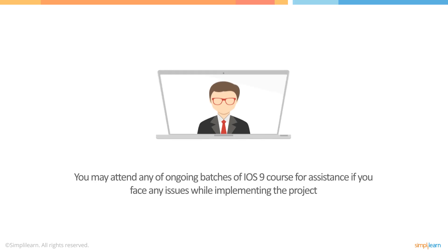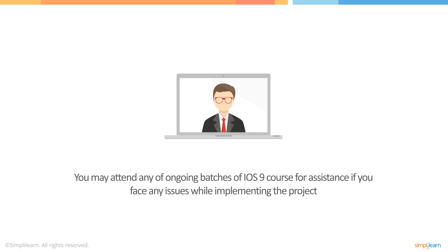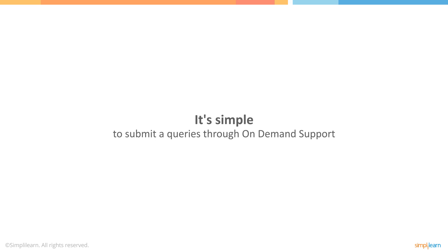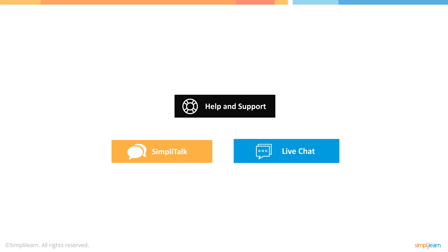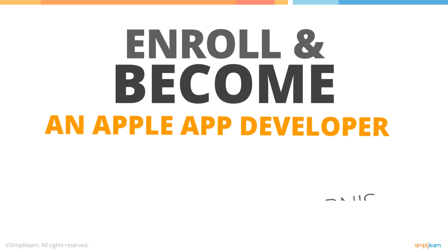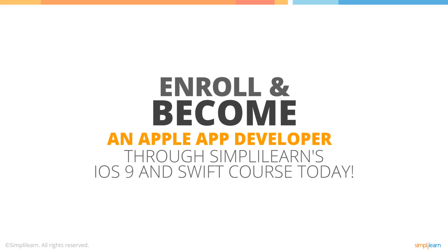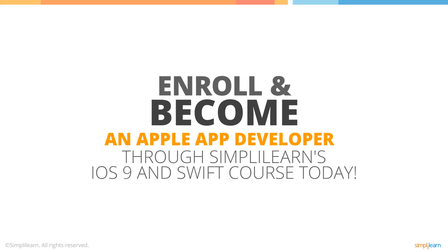If you have subscribed to the live virtual classroom training, you may attend any ongoing batch of the iOS 9 course for assistance if you face any issues while implementing the project. To submit a query through on-demand support, just visit www.simplylearn.com and click help and support at the bottom of the page. You also have the option of Simply Talk and live chat, through which our on-demand support will resolve queries within 48 hours. So take the next step by enrolling and become an Apple app developer through Simply Learn's iOS 9 and Swift course today.